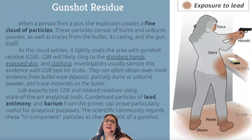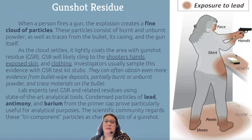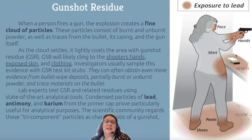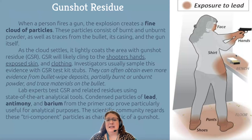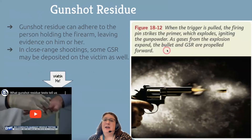What they're looking for are lead, antimony, and barium. These are the primary things you would find in gunshot residue — the big three important things that would let you know that yes, this person has fired a weapon. Gunshot residue can adhere to the person holding the firearm, leaving evidence on them.